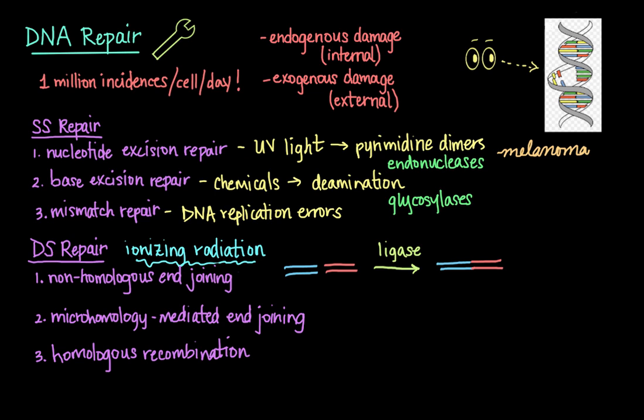Micro-homology mediated end joining works by ligating the mismatched hanging strands of DNA, removing the overhanging nucleotides, and then filling in the missing base pairs. When a break occurs, a homology of, say, 5 to 25 complementary base pairs on both strands is identified and then used as a basis for which to align the strands with the mismatched ends. Once aligned, any overhanging bases, or flaps, and mismatched bases on the strands are removed, and any missing nucleotides are inserted.